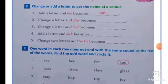Now, change a letter and bad becomes red. B, R, E, D. B ko remove karke hum kya add karengi? R add karengi. R, E, D, red. Add a letter and black becomes black. Change two letters and turtle becomes purple.